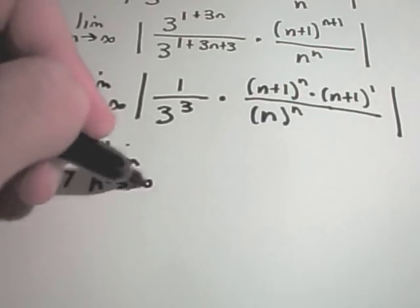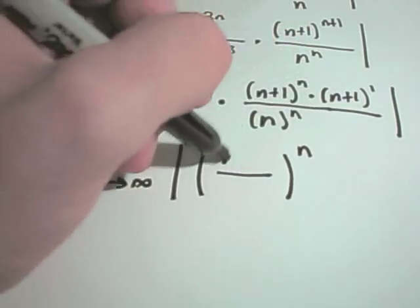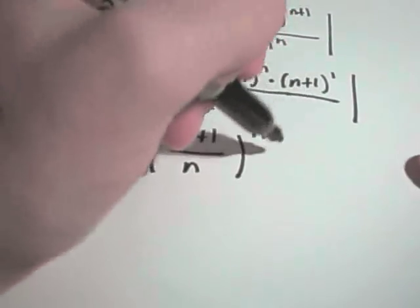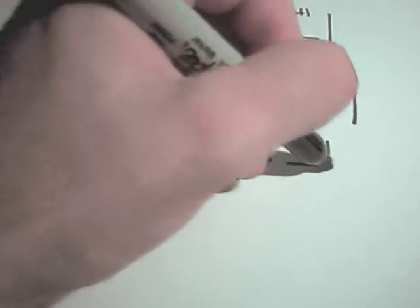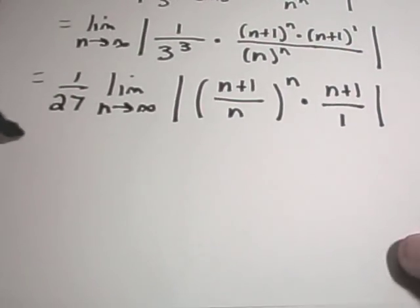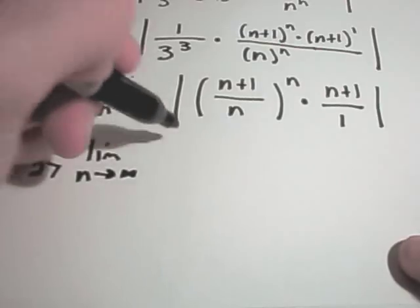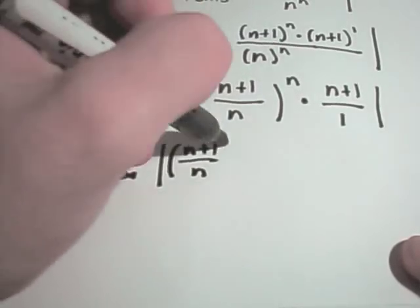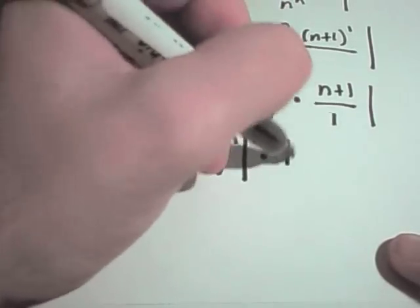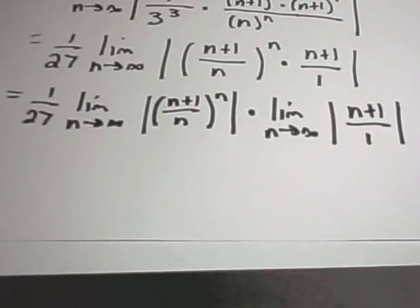I've got the limit as n goes to infinity. And now I'm going to rewrite this first thing. Since it's all being raised to the n power, I can write this as n plus 1 over n times n plus 1 over 1. Maybe even let me bust this up. I can write this as the limit of n plus 1 over n raised to the n times the limit as n goes to infinity of just n plus 1 over 1. So I'm just breaking up this stuff inside, kind of distributing my limit if you want to think about it that way.